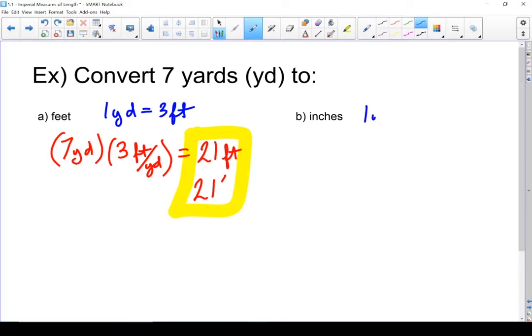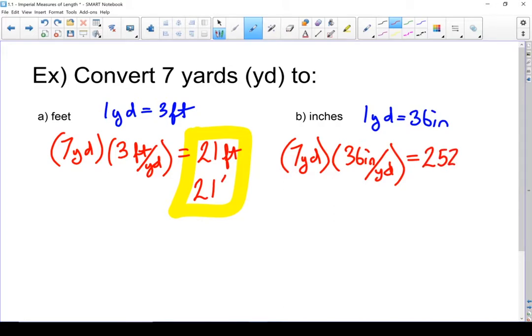If I want to convert 7 yards to inches, my conversion factor is 1 yard equals 36 inches. I end up going through the same process. I've got 7 yards, times that by 36 inches per yard. Multiply those together, that gives me 252 inches. Or, if you want to write it the short way, 252". And there is my correct answer.